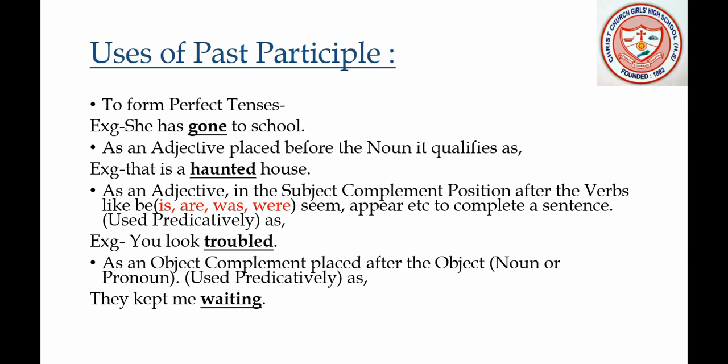Now we shall study the uses of past participle. First, to form perfect tenses. Example: 'She has gone to school.' In this sentence the word 'gone' is the past participle, and by reading this sentence we can clearly understand that the action is completed.